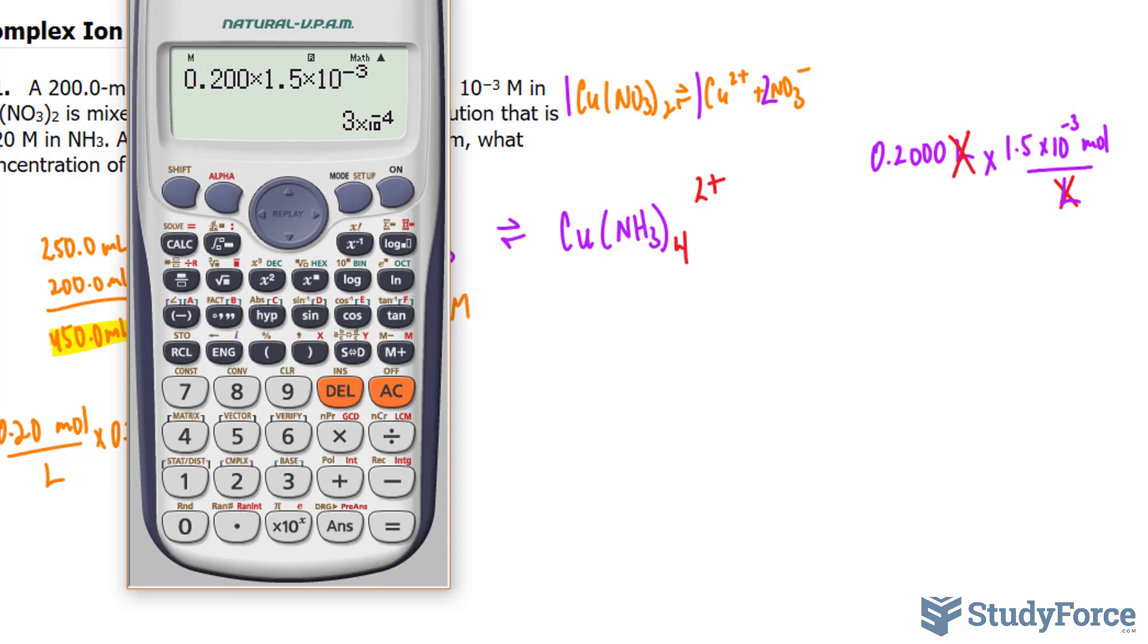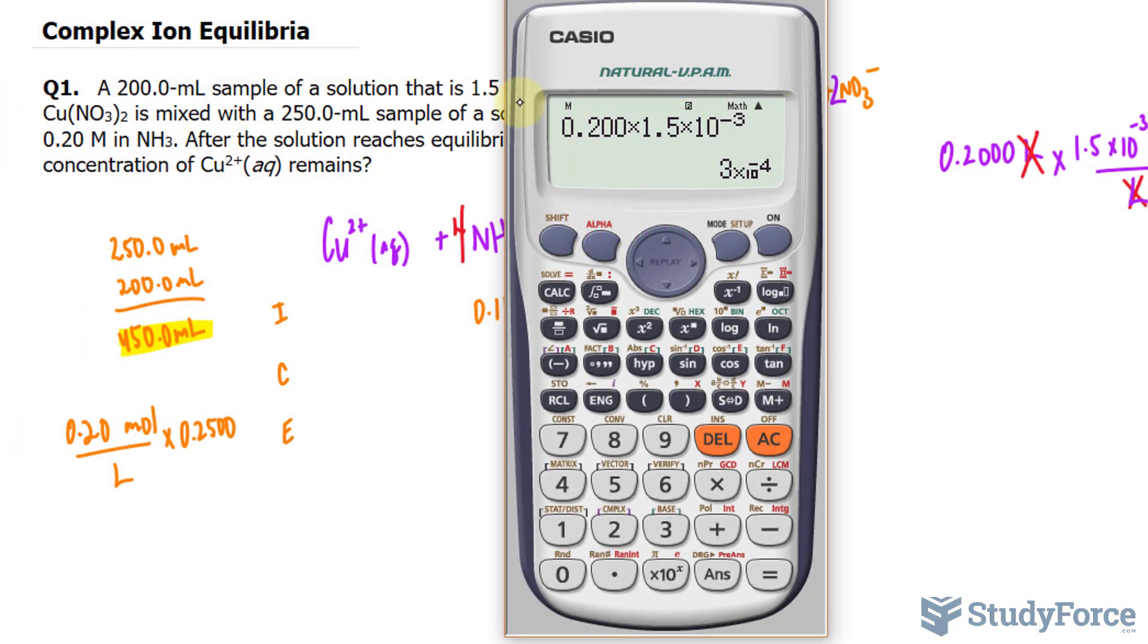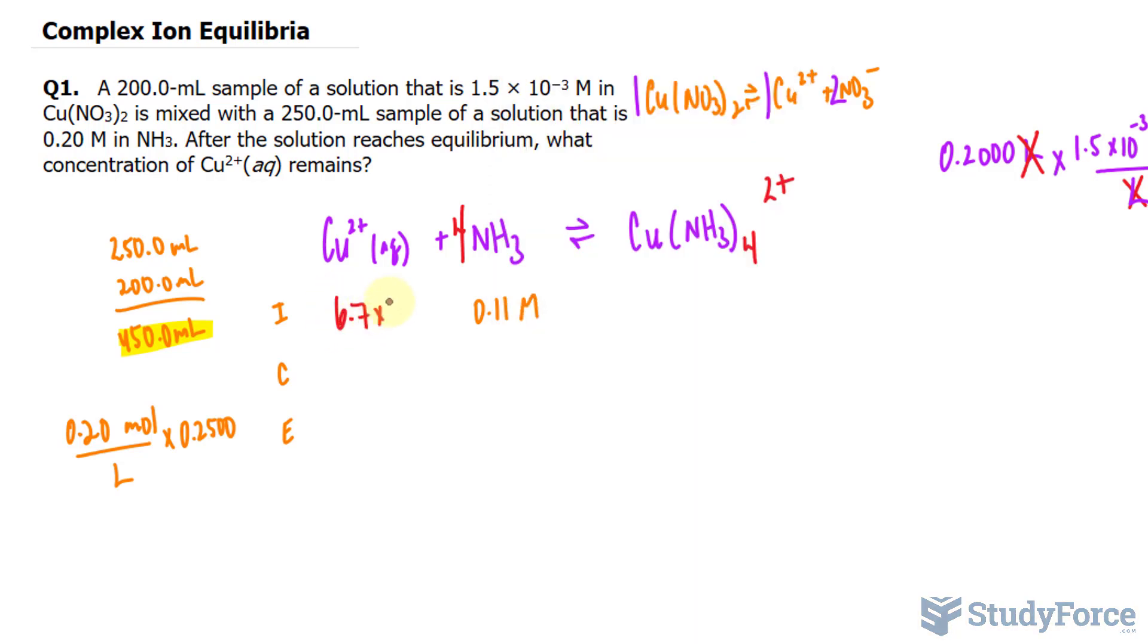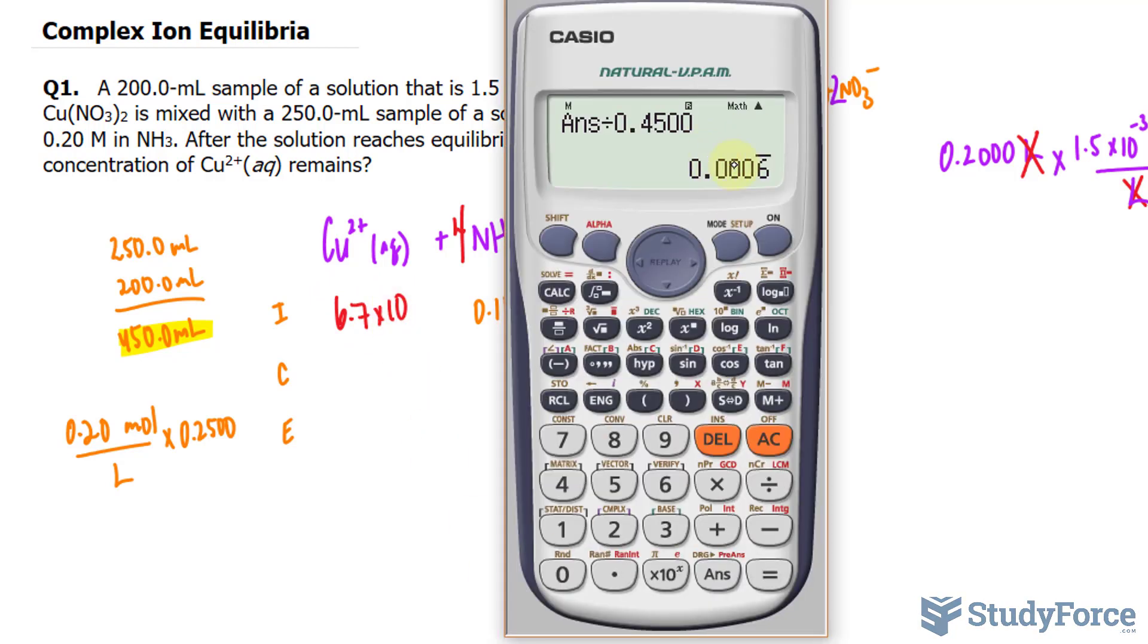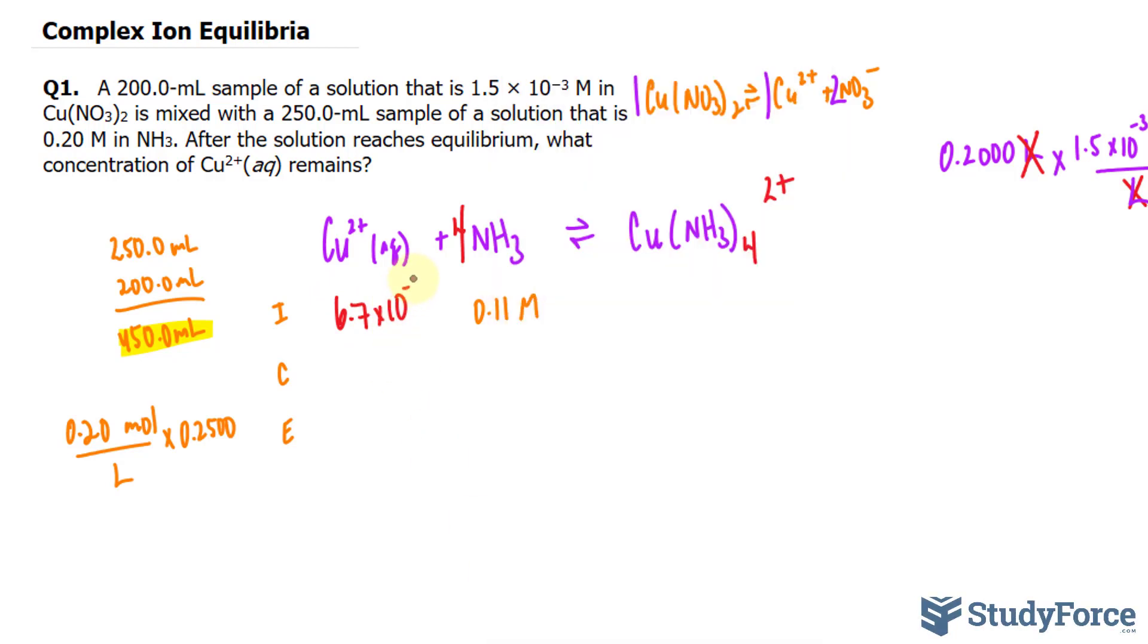And since it's a one-to-one ratio, that's the amount of moles of Cu2+ as well. I'll take this number, divide it by the volume of 0.4500, and we get 6.7 times 10 to the negative 4 molar of Cu2+. I wrote down 6.7 because I'm rounding it to two significant figures.